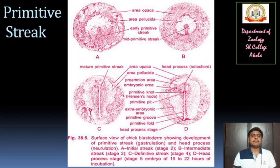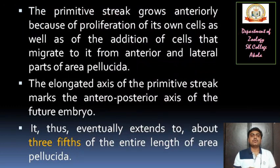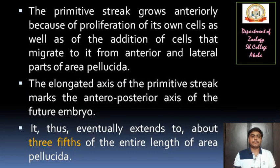Again, the same diagrams A, B, C, and D — here I am showing how the primitive streak takes its shape for the formation of the embryo. These are the various developmental stages due to mitosis. The primitive streak grows anteriorly because of proliferation of its own cells and also by the addition of cells that migrate from anterior to lateral parts of the area pellucida. The elongated axis of the primitive streak marks the anteroposterior axis of the future embryo, eventually extending to about three-fifths of the entire length of the area pellucida.